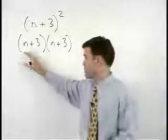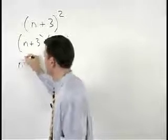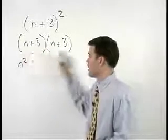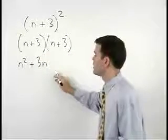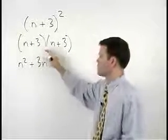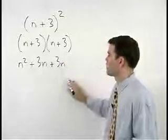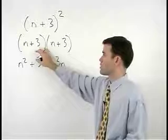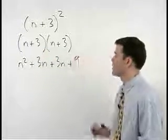So the product of the first terms n times n is n squared, plus the product of the outer terms n times positive 3 is positive 3n, plus the product of the inner terms positive 3 times n is positive 3n, plus the product of the last terms positive 3 times positive 3 which is positive 9.